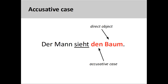So far in our study of German, we have learned that direct objects are marked with the accusative case. In this sentence, for example, 'der Mann sieht den Baum' — the man sees the tree — 'den Baum' is the direct object of the verb 'sieht' and is therefore in the accusative case.